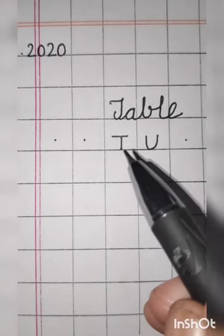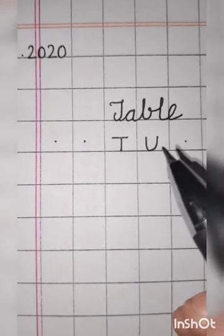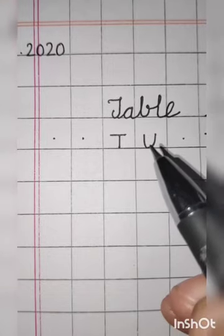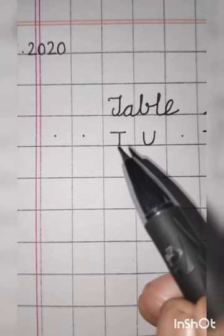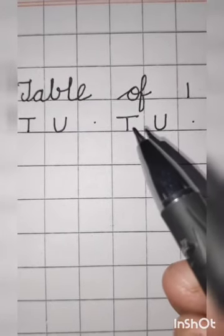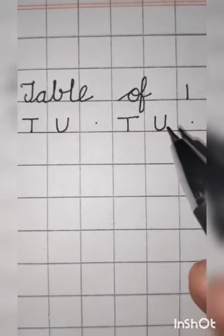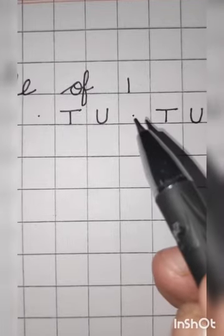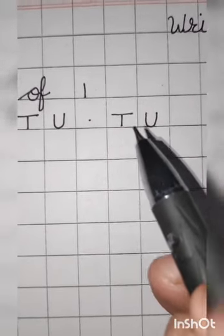One, two. Then write down T-U. U stands for unit ones. T stands for tens. Leave one box. Leave one box. Then write down T-U. Again leave one box. Write down T-U.